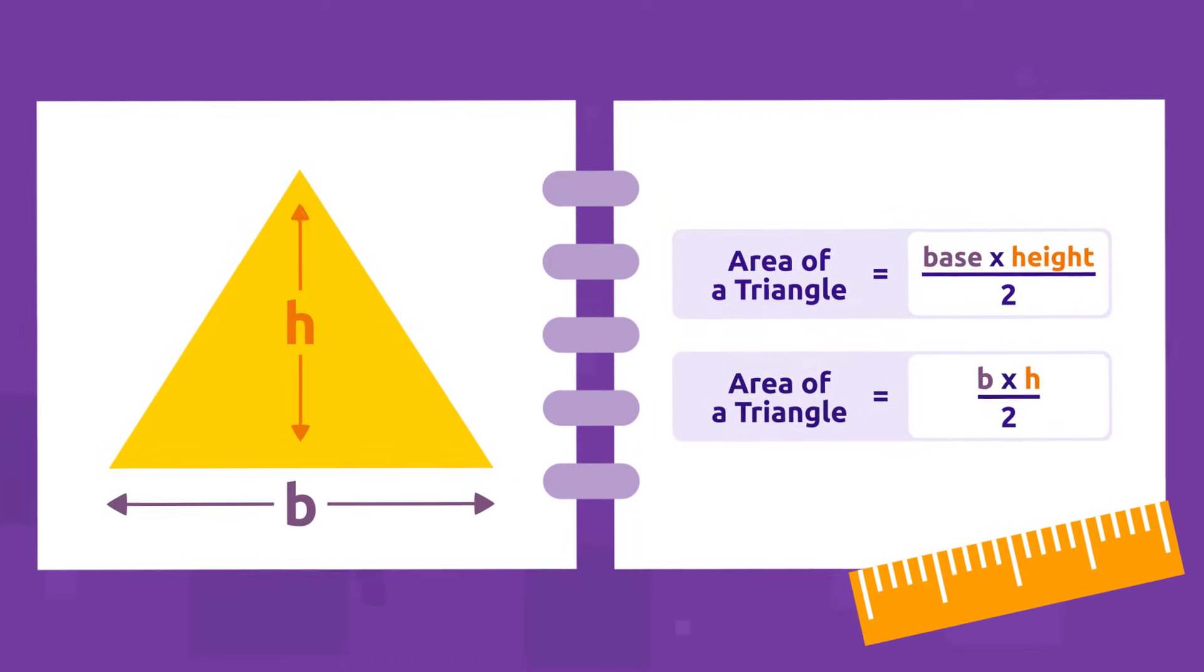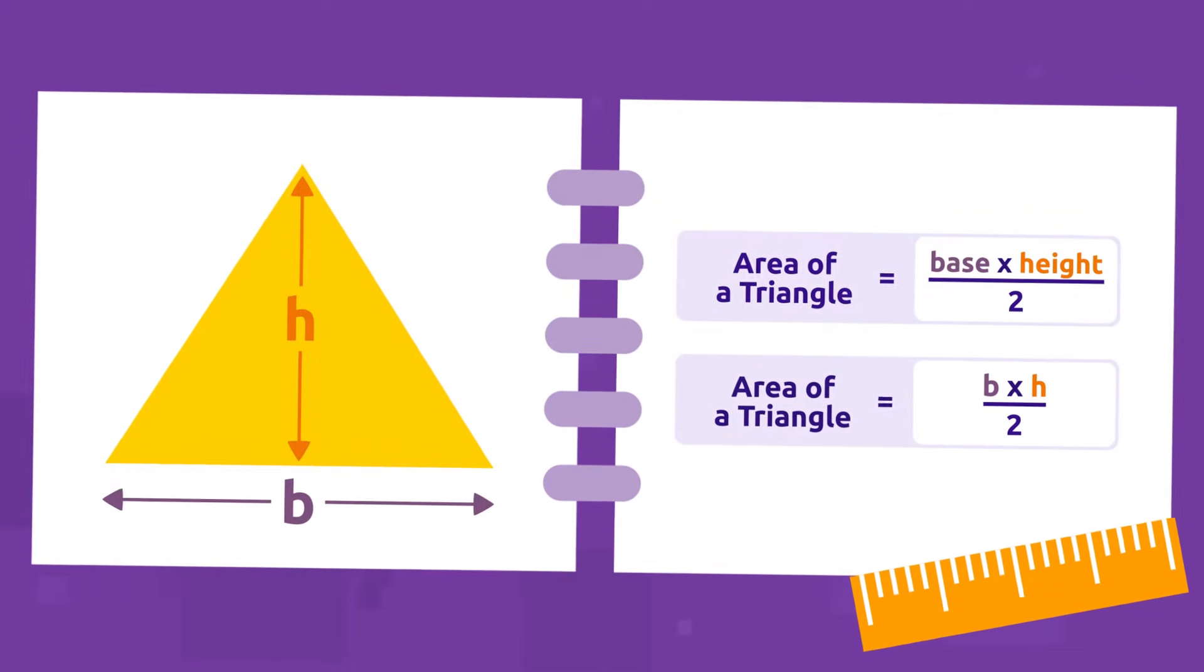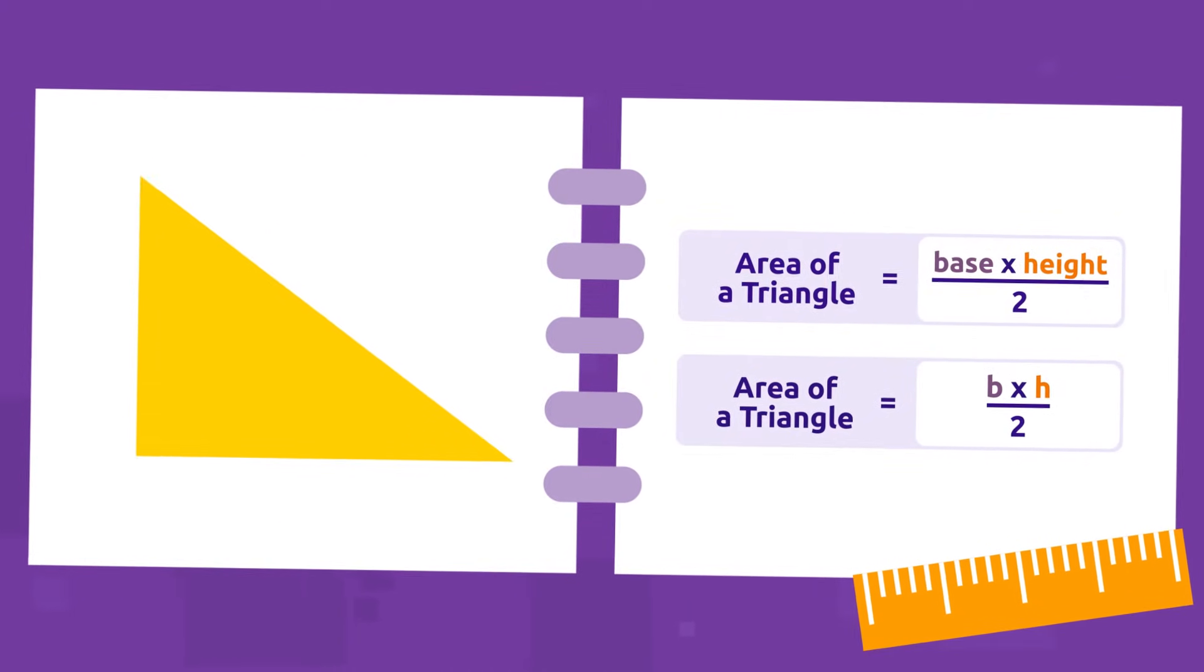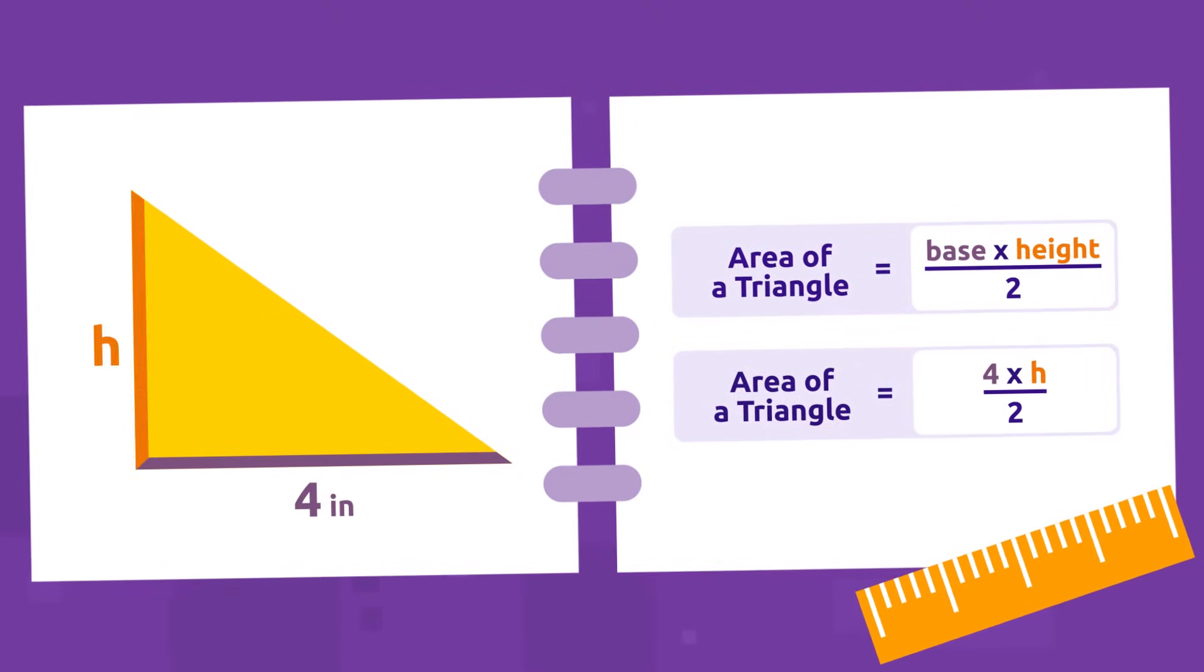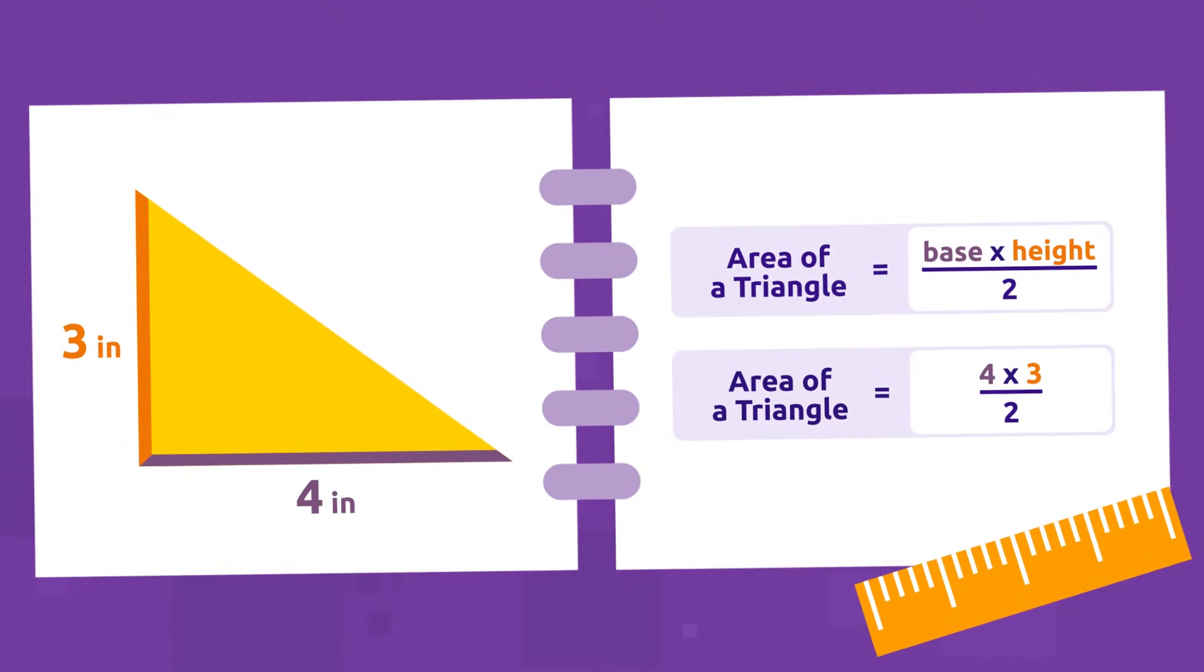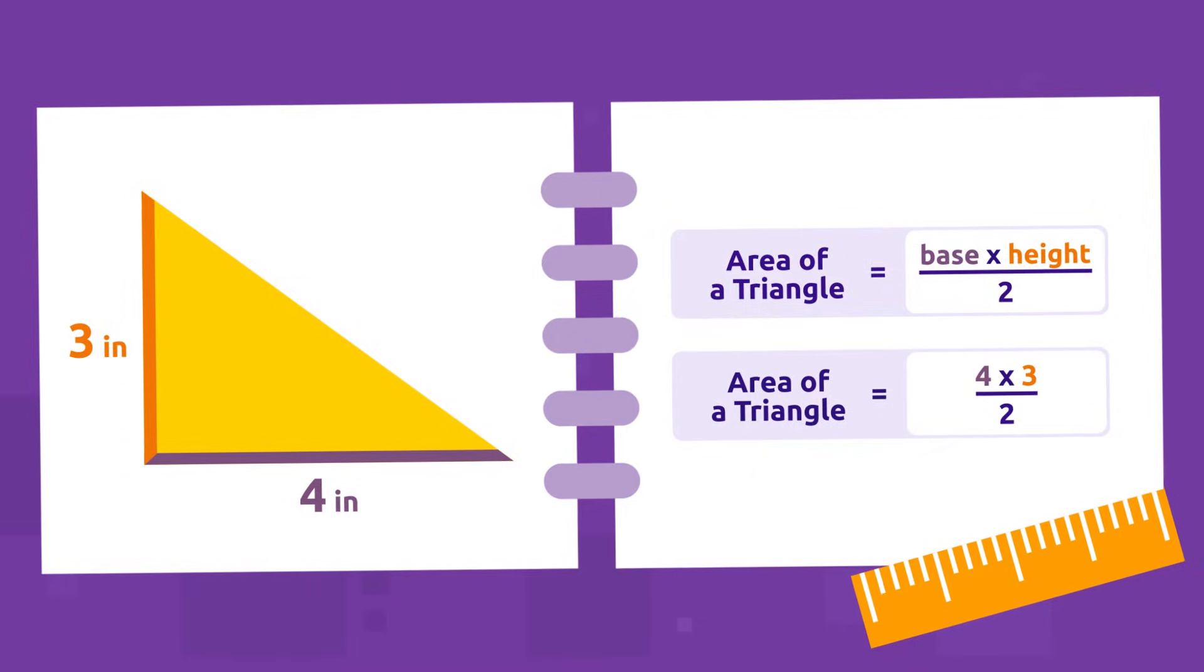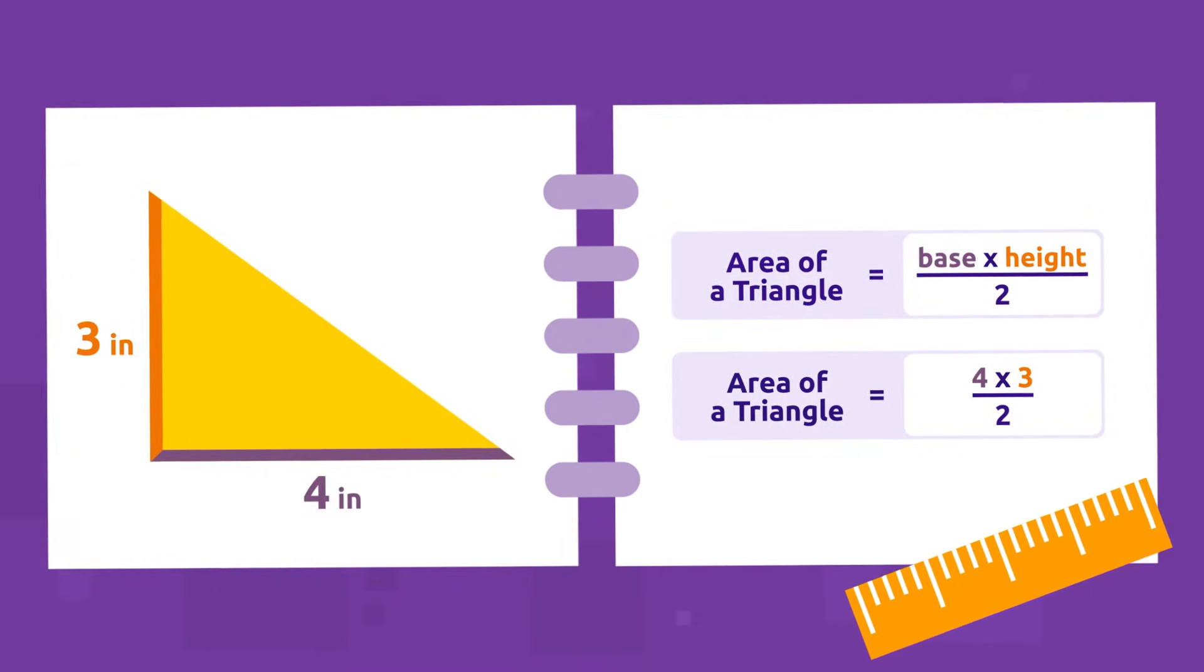Let's practice with a right triangle. The base of this triangle measures four inches and its height measures three inches. What will its area be? Let's see. To calculate the area of a triangle, we must multiply the base by its height and then divide it by two.